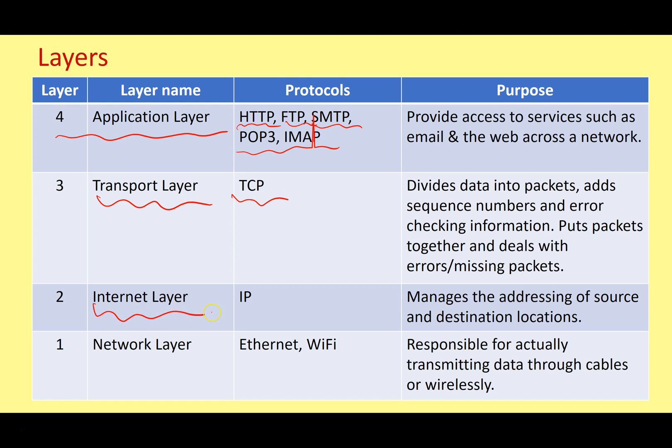Underneath that, we've got the internet layer — that's the Internet Protocol. It's all about addressing the data, making sure it can get from one computer to another to the right destination over a network. It adds the source address and the destination address. And then underneath that, we've got another layer, sometimes referred to as the network layer or data link layer. That's all about Ethernet and Wi-Fi — getting the data ready to be physically transmitted, either along cables or through the air using radio waves in the case of Wi-Fi.